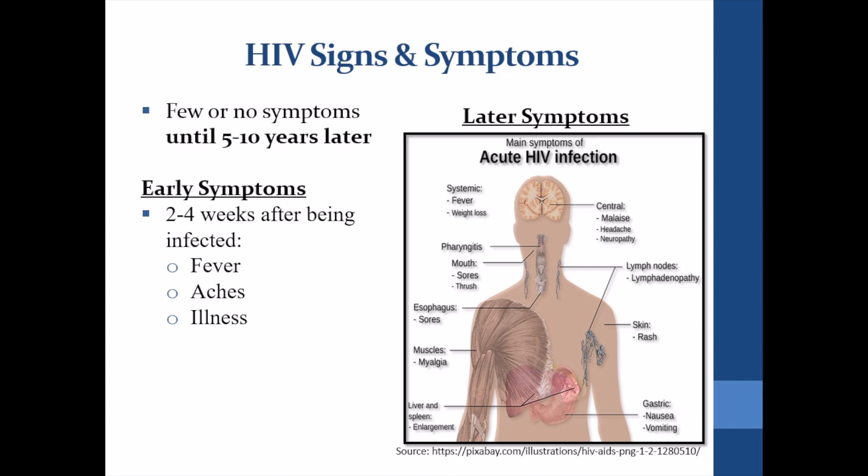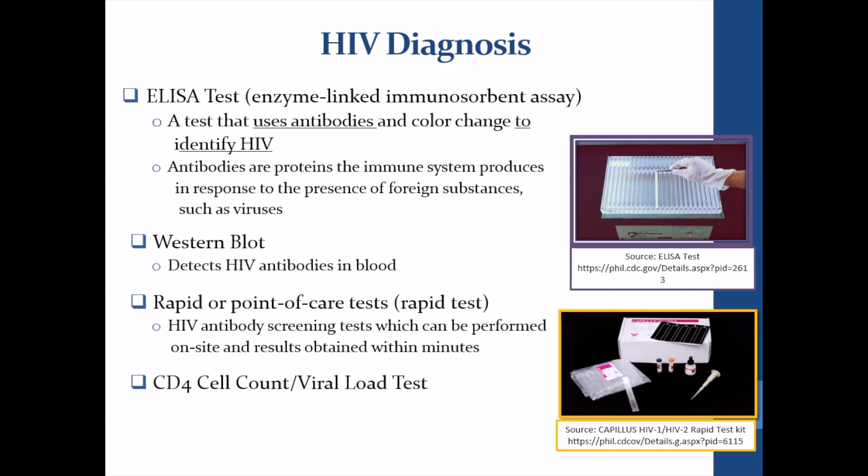HIV diagnosis: blood tests are the most common way to diagnose HIV. Some of these tests include ELISA and the CD4 cell count, which are able to detect antibodies to the virus. A rapid HIV antibody test can also be used to detect HIV in an infected person in less than 30 minutes.